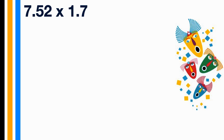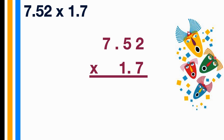First thing we must do is set up our problem. When we are multiplying by decimals, we must treat it as if we are multiplying regular whole numbers — that's the first step. Let's multiply: 7 times 2 is 14, regroup. 7 times 5 is 35, plus 1 gives us 36.